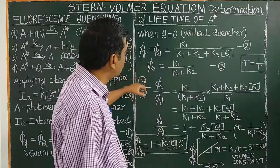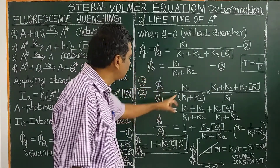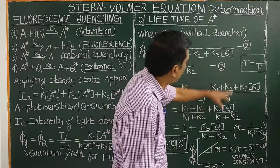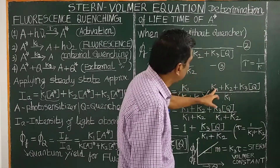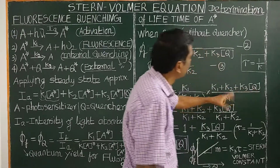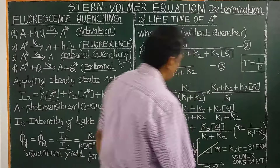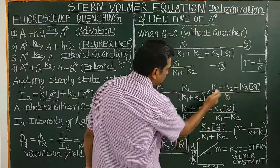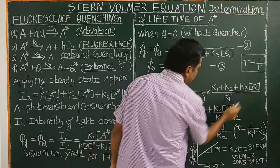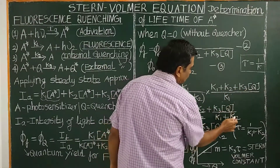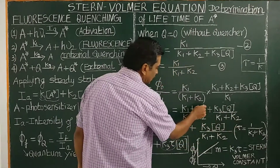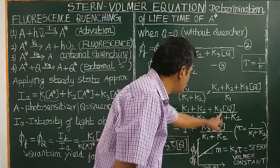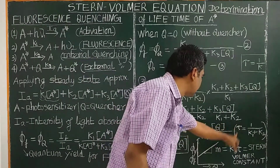Now let us take the ratio φ_0 by φ_Q. Taking K1/(K1+K2) divided by K1/(K1+K2+K3[Q]): K1 will cancel, giving (K1+K2+K3[Q]) divided by (K1+K2). Therefore, φ_0/φ_Q equals 1 plus K3[Q] divided by (K1+K2).